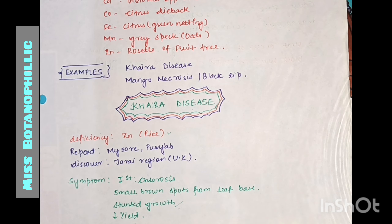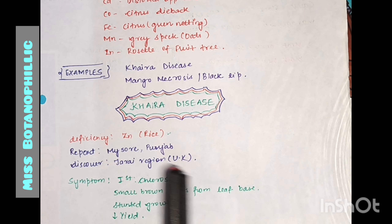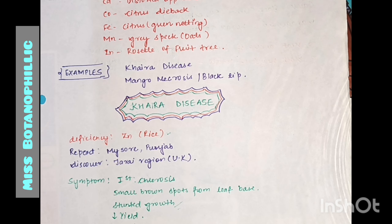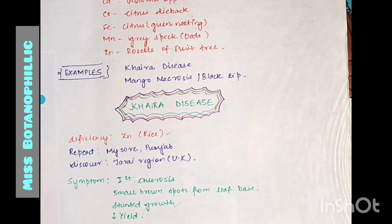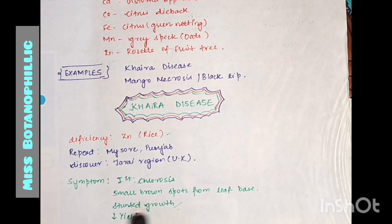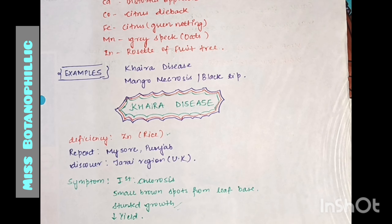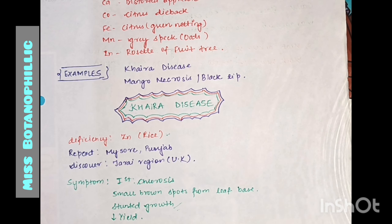The first report of Khera disease was made in Mysore and Punjab. When we see chlorosis — that is, yellowing of leaves — along with small brown spots from the leaf base, that is what we have to observe. These brown spots appear from the leaf base, the plants grow slowly, and they develop into a dwarf type plant.